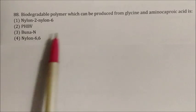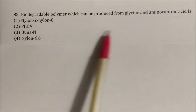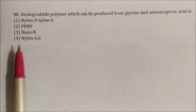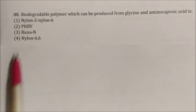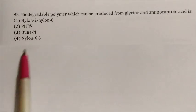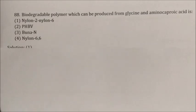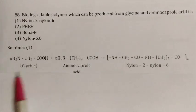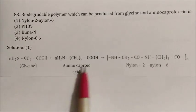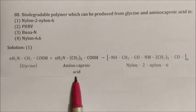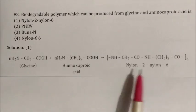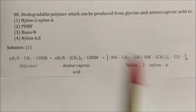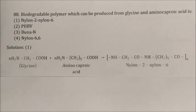Question: Which biodegradable polymer can be produced from glycine and amino caproic acid? Glycine is an amino acid (NH2−CH2−COOH) and amino caproic acid is the monomer for Nylon 6. From these two monomers we can prepare Nylon 2-Nylon 6. Answer: option 1, Nylon 2-Nylon 6.